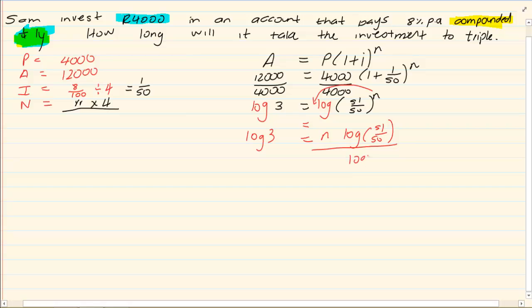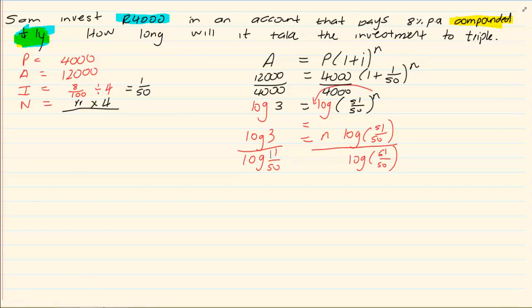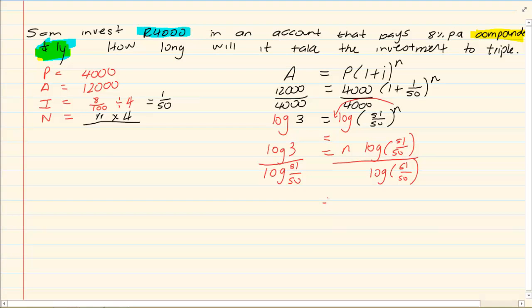Divide by log 51 over 50. This you would press in your calculator. So we have N is equal to 55.5.